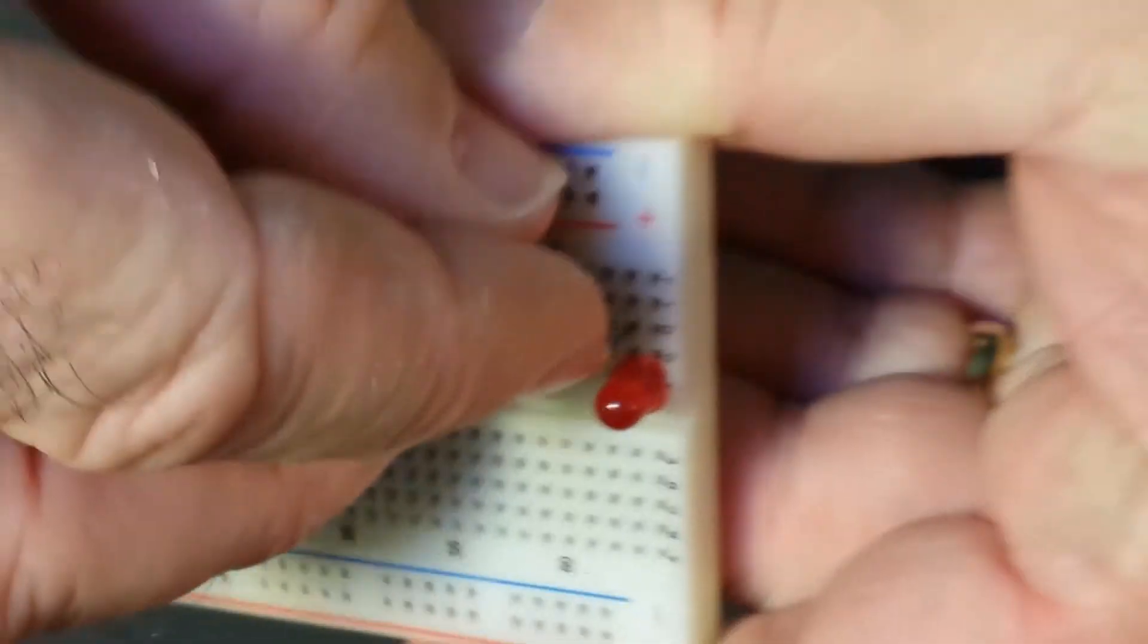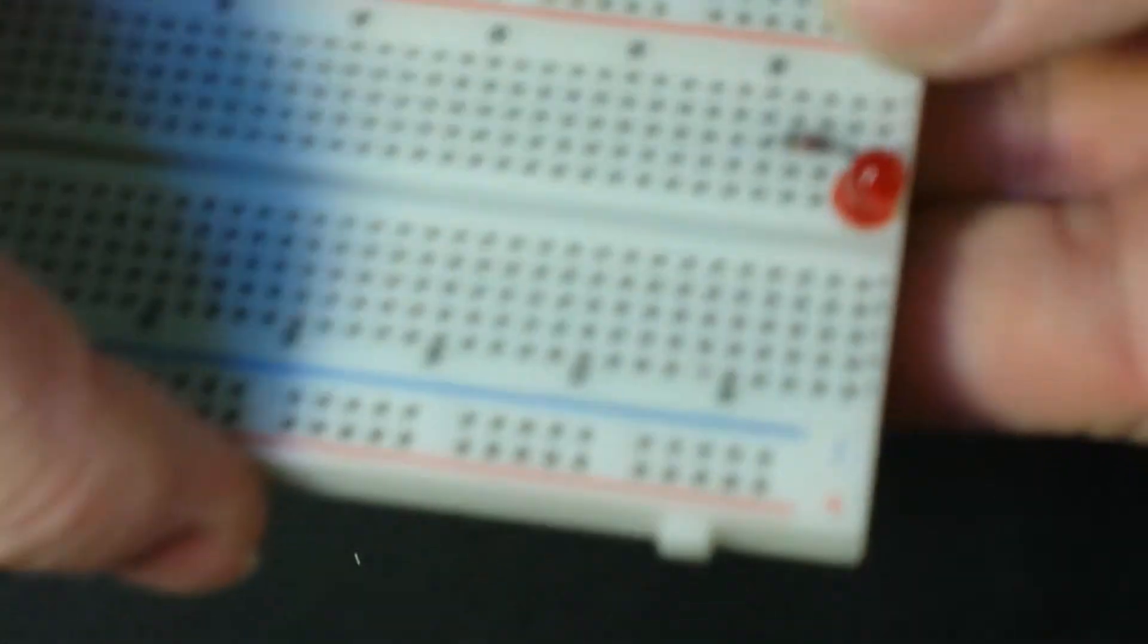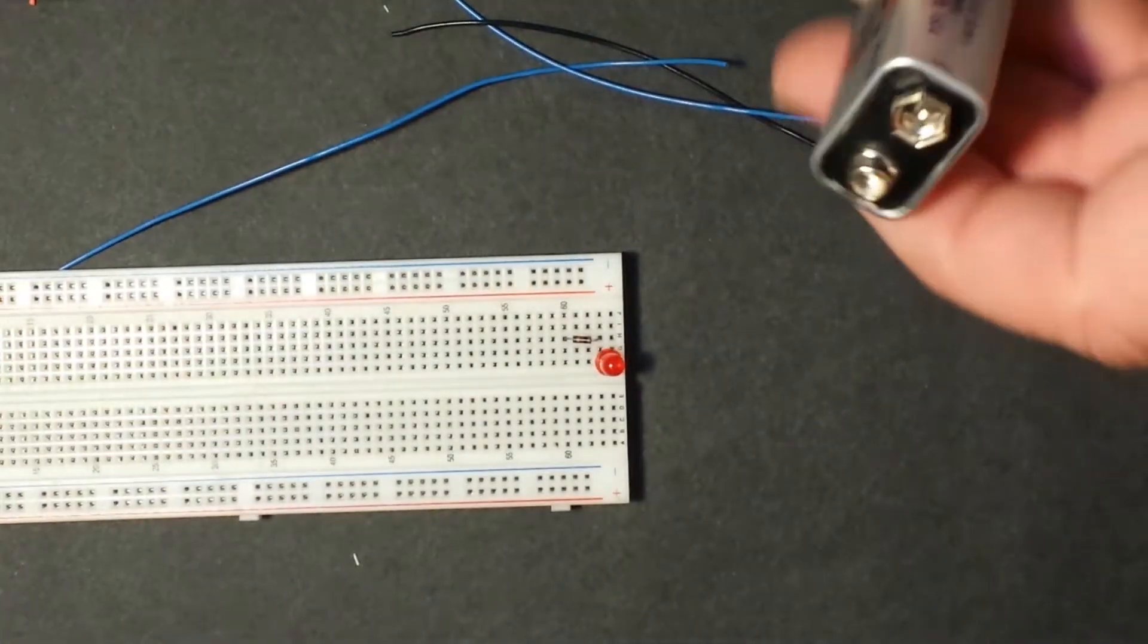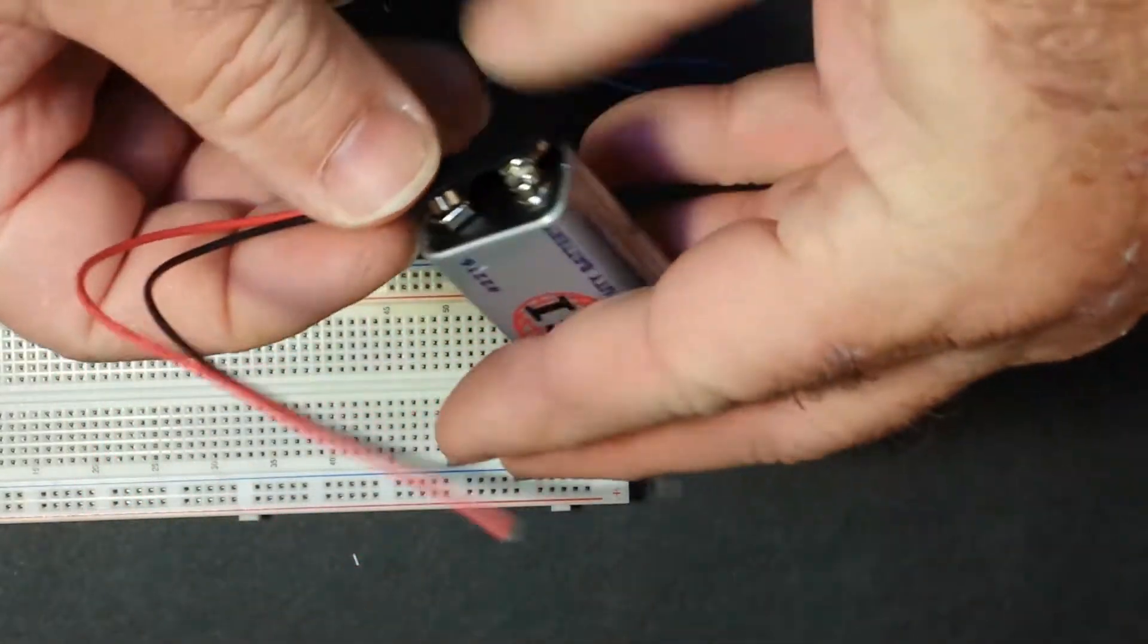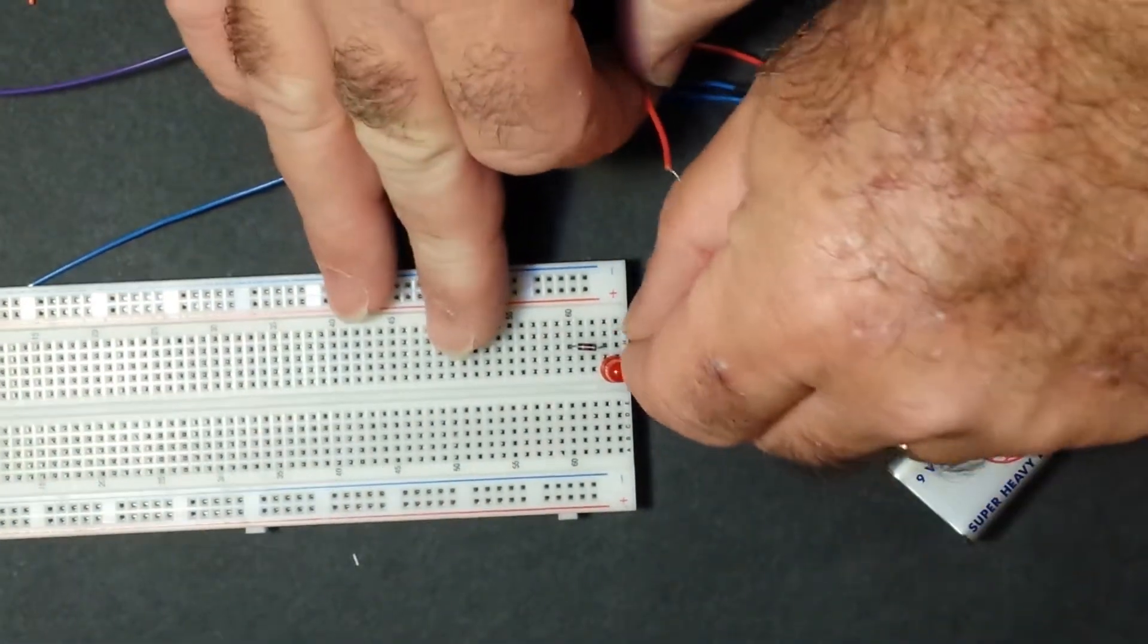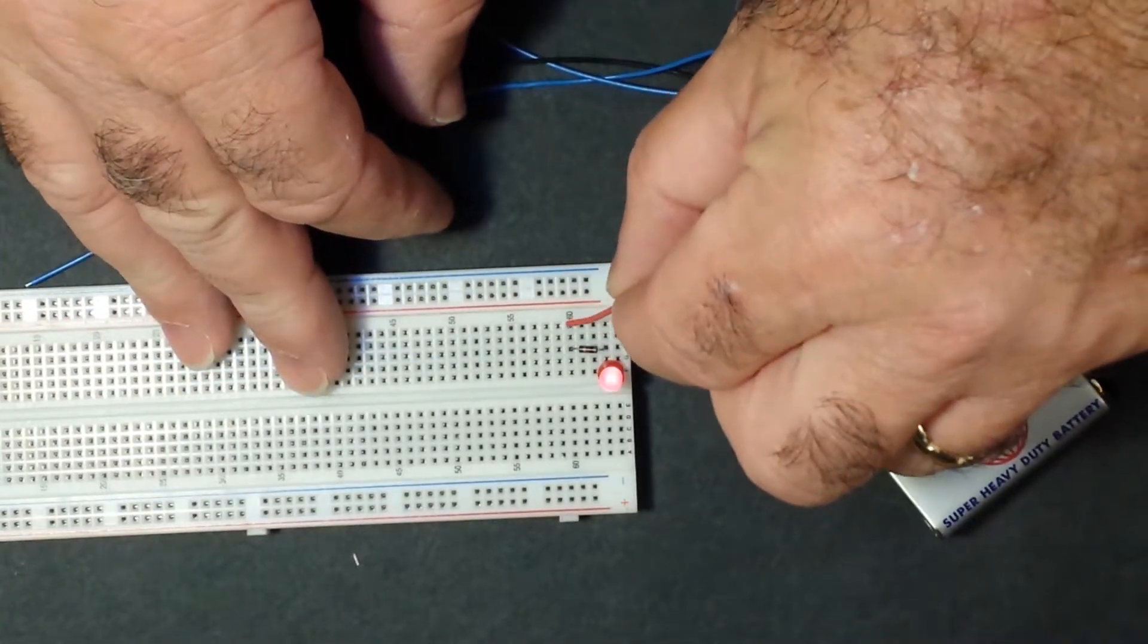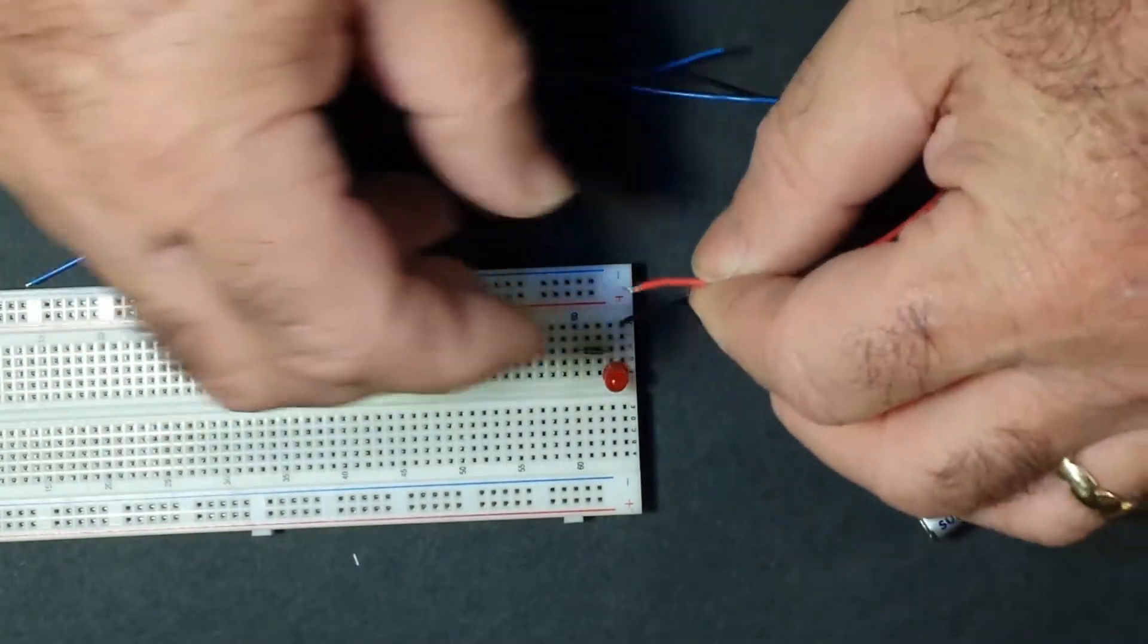You'll see why we're doing all this, plugging this in right here. All right, here's a nine volt battery, and my nine volt battery right here. Plug this in right here, and then right here, and we have nine volts.